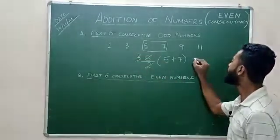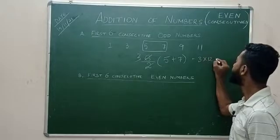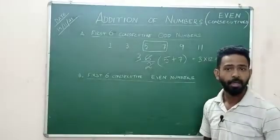The answer would be three into twelve, that would be thirty-six. That is your final answer.